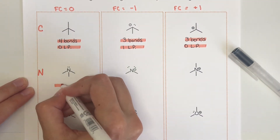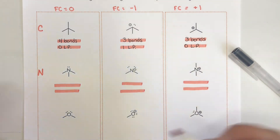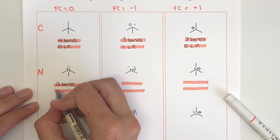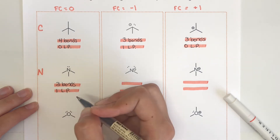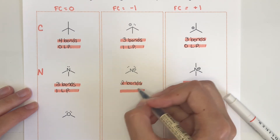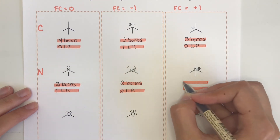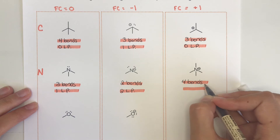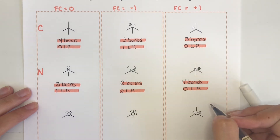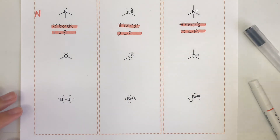Moving on to nitrogen: neutral nitrogen has three bonds and one lone pair. Negatively charged nitrogen has two bonds and two lone pairs. Positively charged nitrogen has four bonds and no lone pairs. Again, that applies for any combination of single, double, or triple bonds — I've drawn them all single here for simplicity.